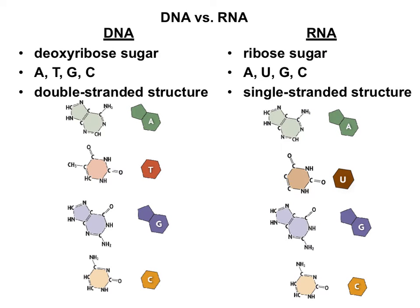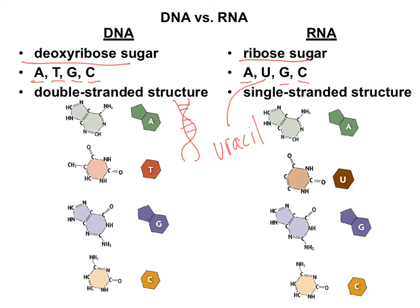Before we jump into the actual steps of protein synthesis and get into transcription and translation, we need to remember what the bases are in DNA and RNA and some of the differences between them. DNA stands for deoxyribose nucleic acid. Its sugar is deoxyribose, and the sugar in RNA is ribose. The bases in DNA are adenine, thymine, guanine, and cytosine. Remember that DNA is double-stranded, and RNA is single-stranded — it's just half of that DNA ladder.